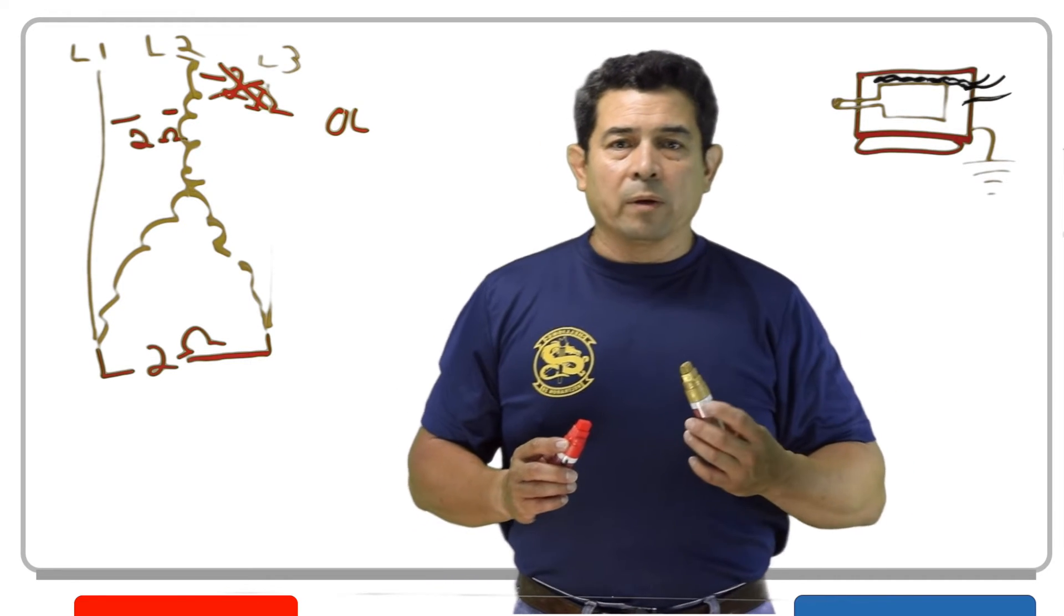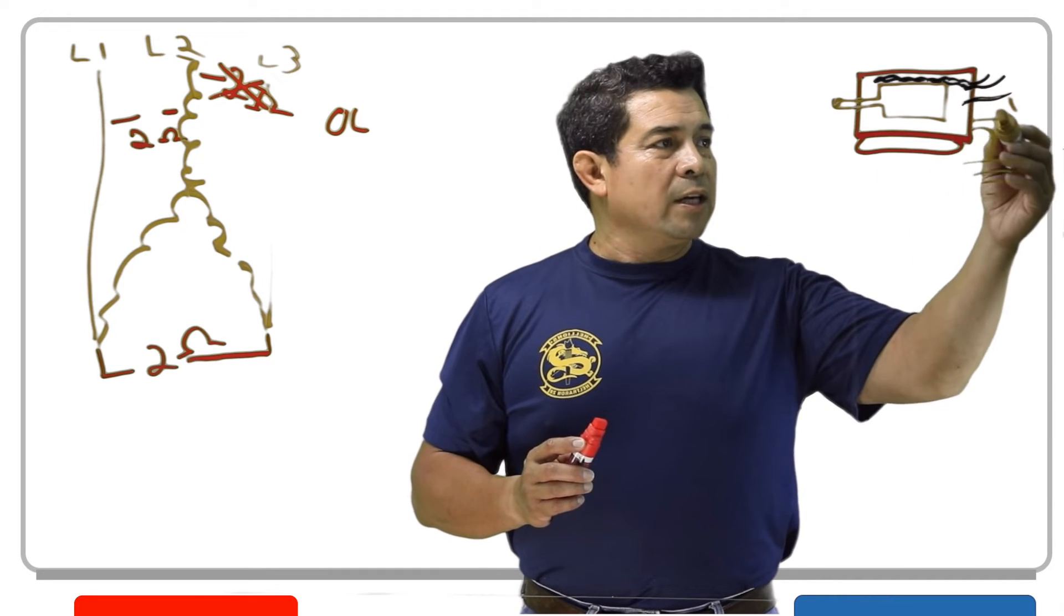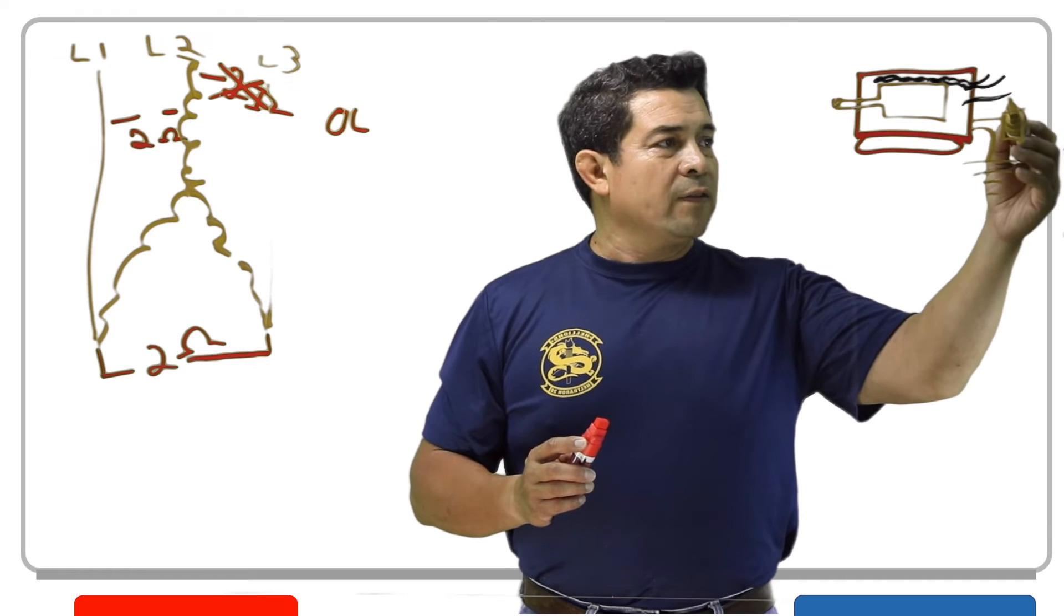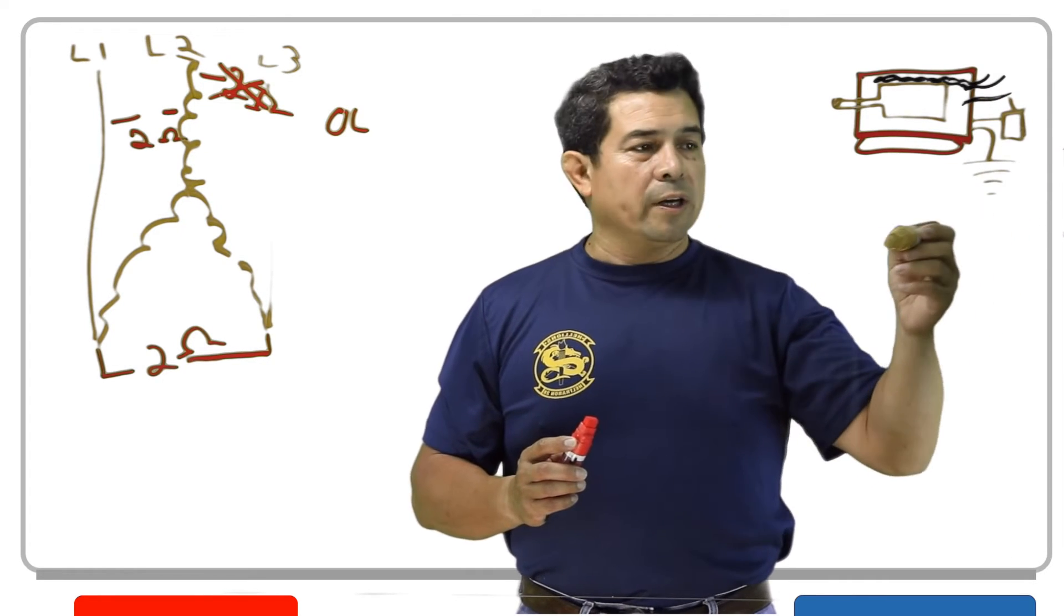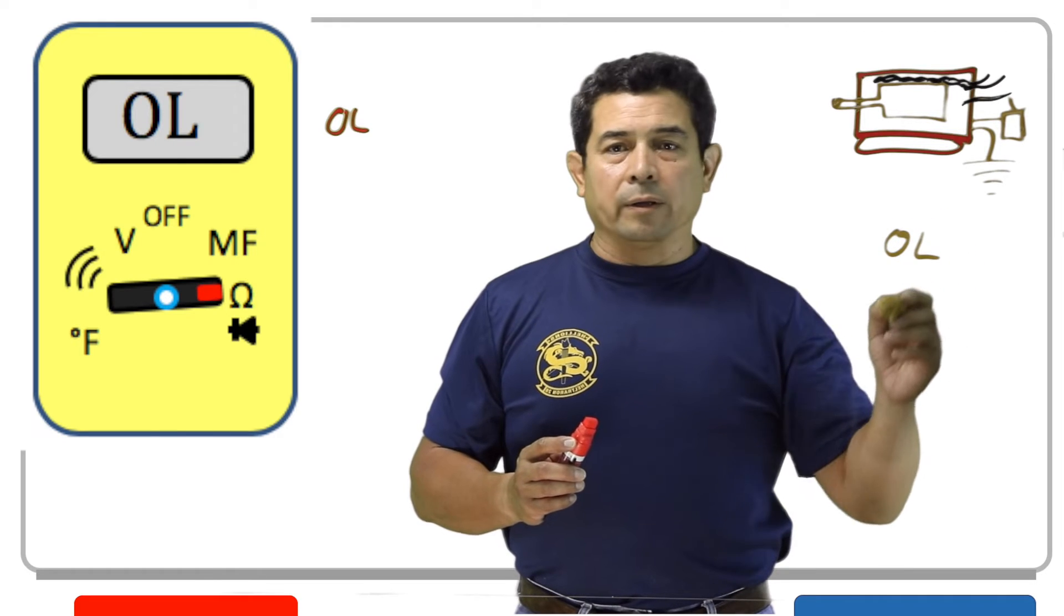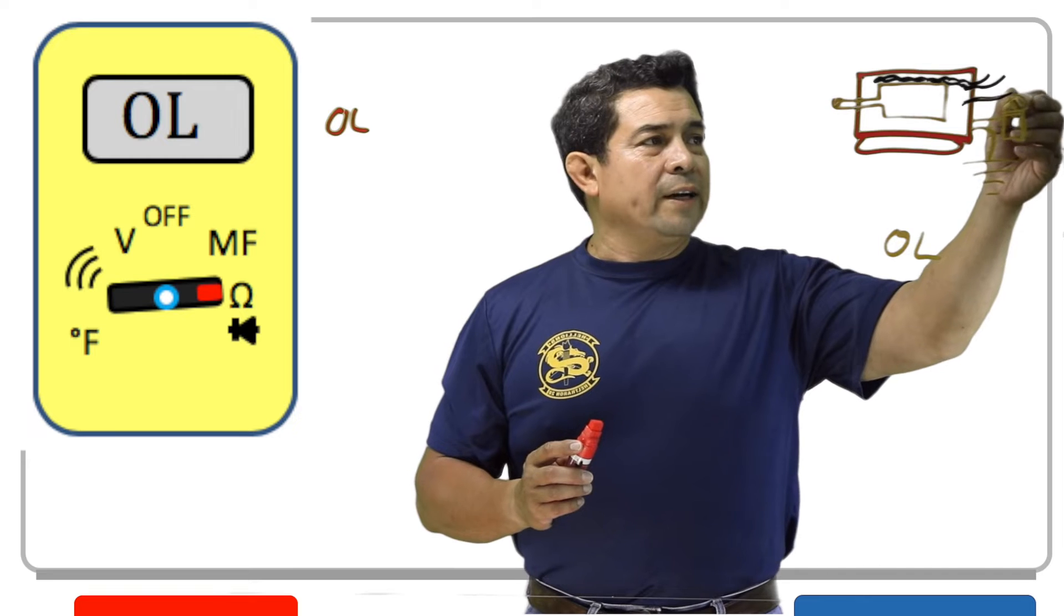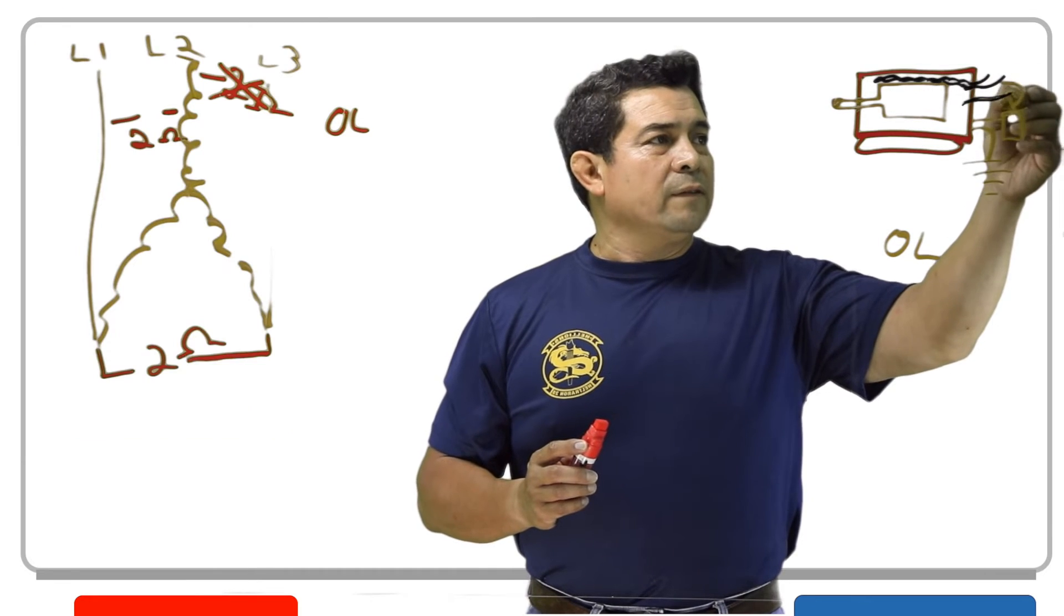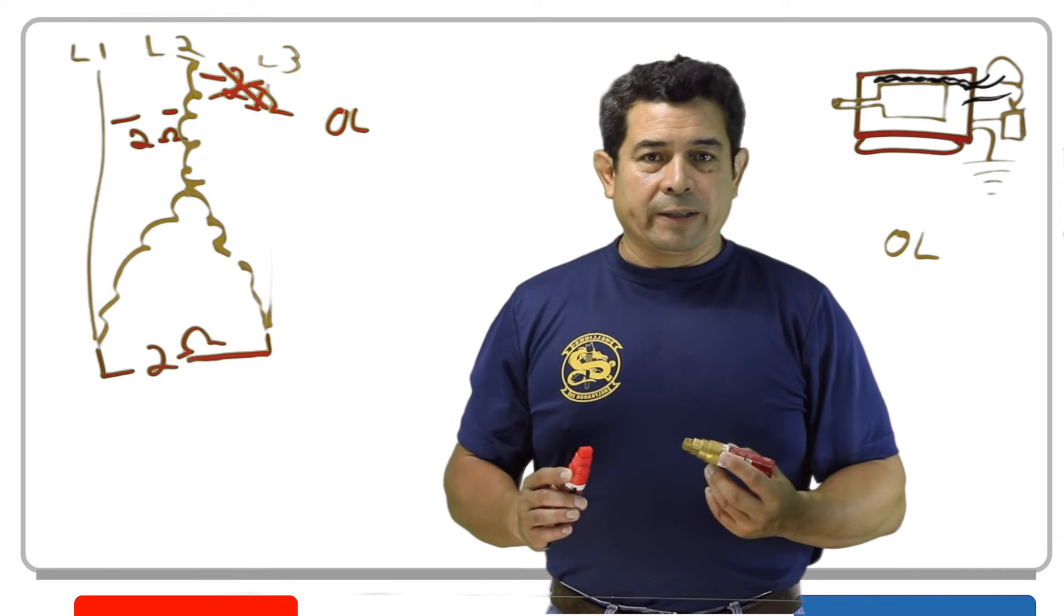Another check you might want to make is to go from one of the windings here to the casing. Once we check that on your meter, then we should get what? We should get OL, open lead or open line. We should never have a connection from any of these to the casing. If we do, then the motor is bad.